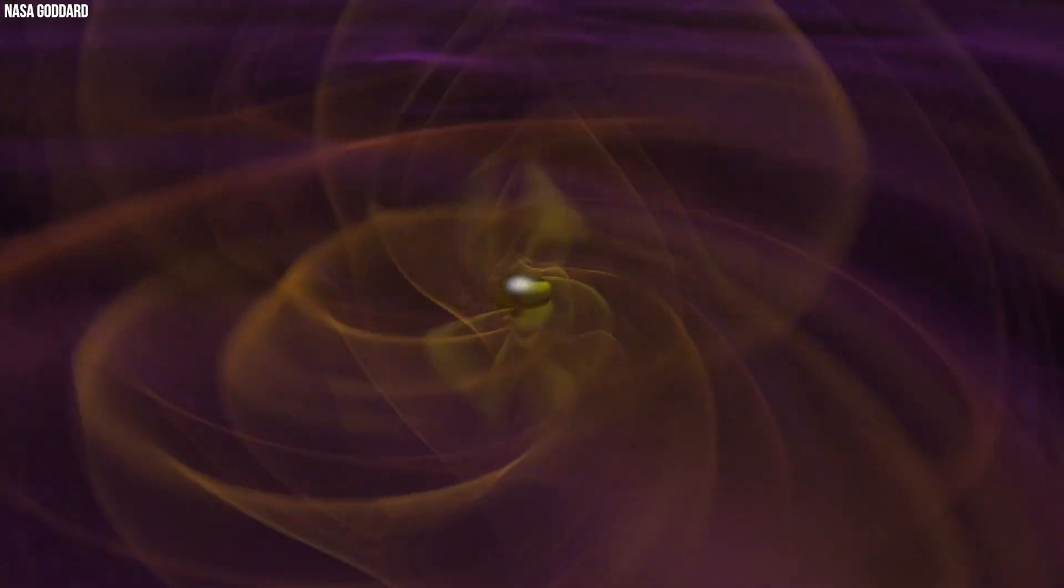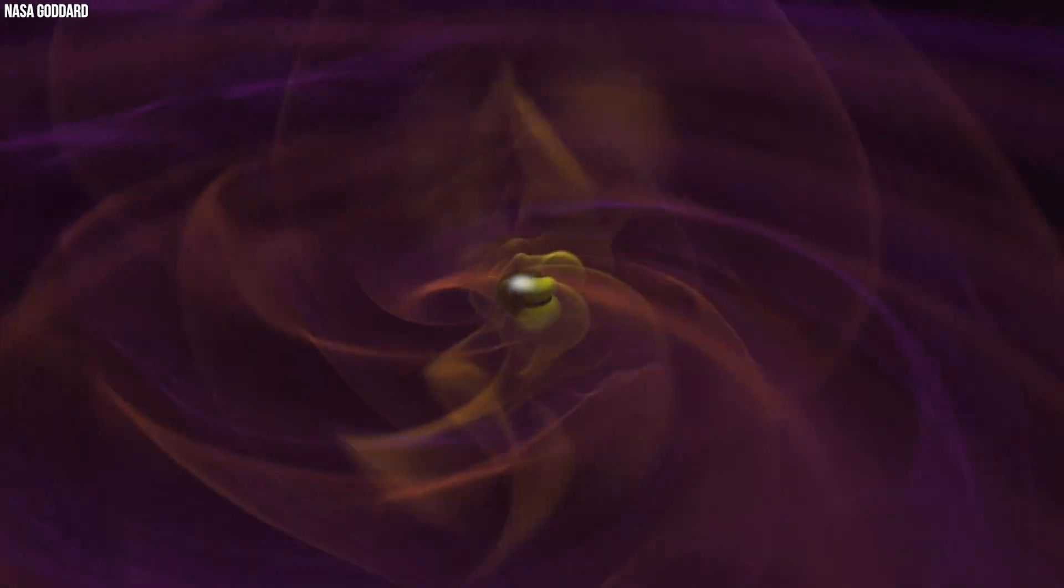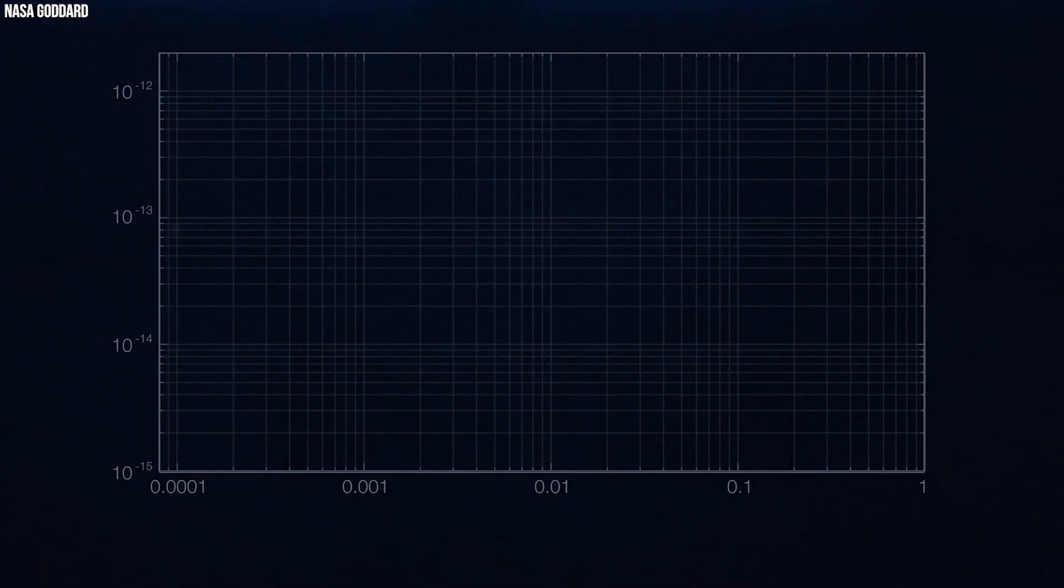The gravitational waves audible to LIGO and other ground-based detectors possess wavelengths of thousands of miles, roughly the size of Earth, with periods ranging from milliseconds to seconds.